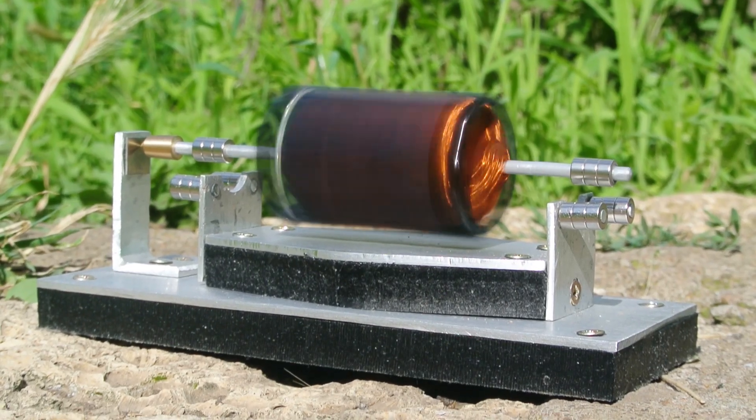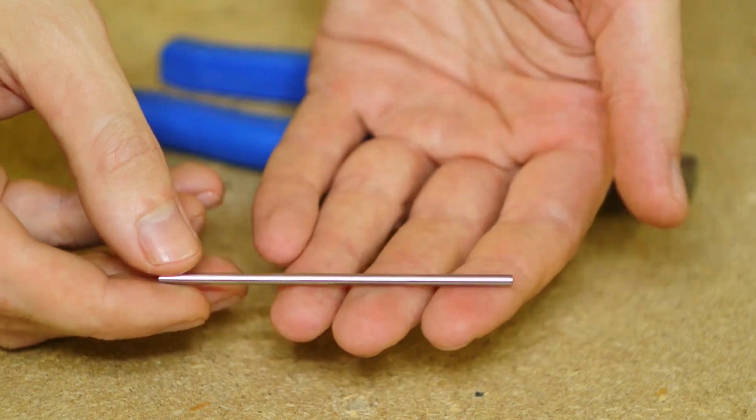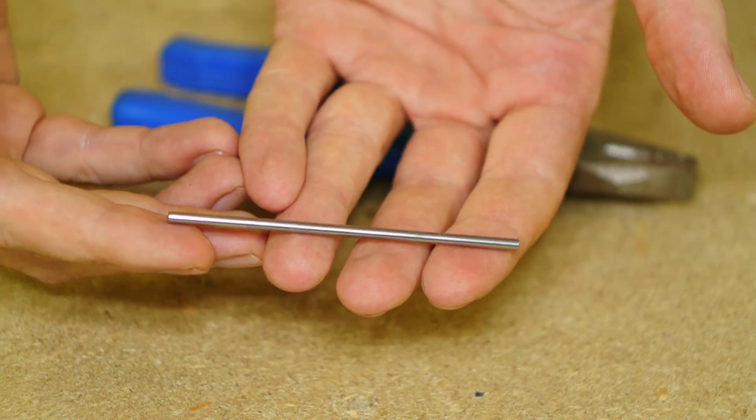I want to show you one of the ways to build a Mendocino motor in this video. We need a shaft 3cm thick. I took it from a CD-ROM.